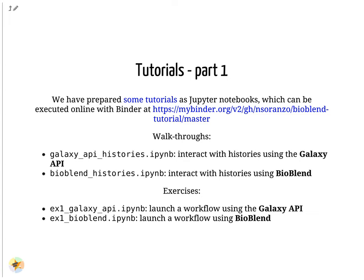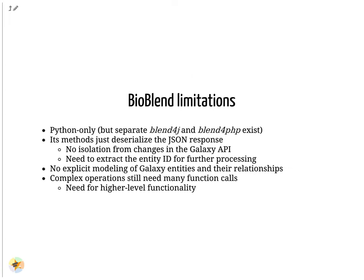Although easier to use than the Galaxy API, BioBlend has some limitations. First of all, it's only available for Python. There are alternative libraries for Java and PHP, but they are less complete. Another limitation of BioBlend is that it doesn't shield the caller from possible changes in responses from the Galaxy API. It can also be annoying to have to constantly keep track of entity IDs. This happens because BioBlend does not try to model Galaxy entities and how they are connected.